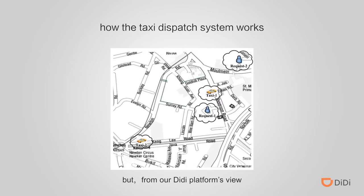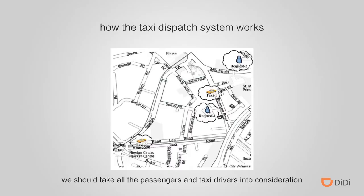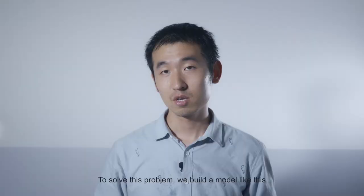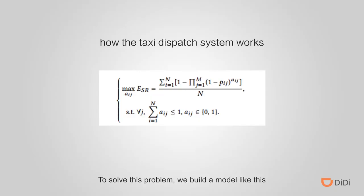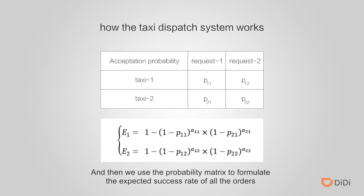But from our DD platform's view, we should take all the passengers and taxi drivers into consideration. So the best solution may be to dispatch request 1 to taxi 2 and request 2 to taxi 1. To solve this problem, we built a model using logistic regression to estimate the acceptance probability between each taxi driver and each passenger, and then use the probability matrix to formulate the expected successful rate of all the orders.